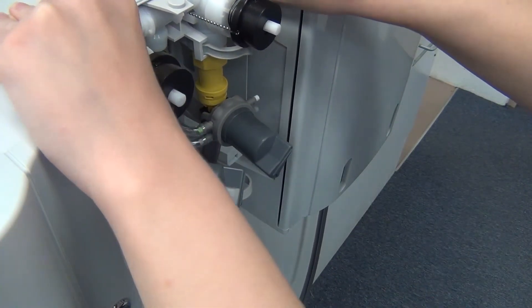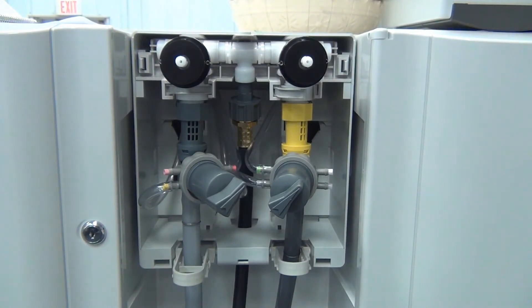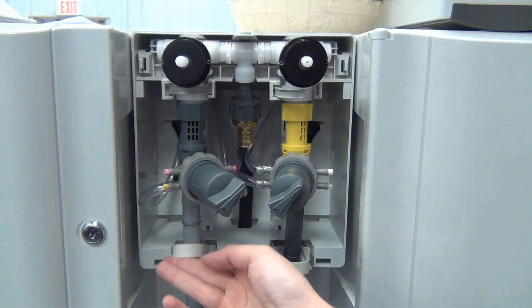Now you can test the dispenser is functioning properly. If you hear the click when you engage the dispenser, you are ready to put the cover back on. If you do not hear a click when you engage the dispenser, you'll need to repeat the steps until the ball chain is correct. You can see both sides here are now working.